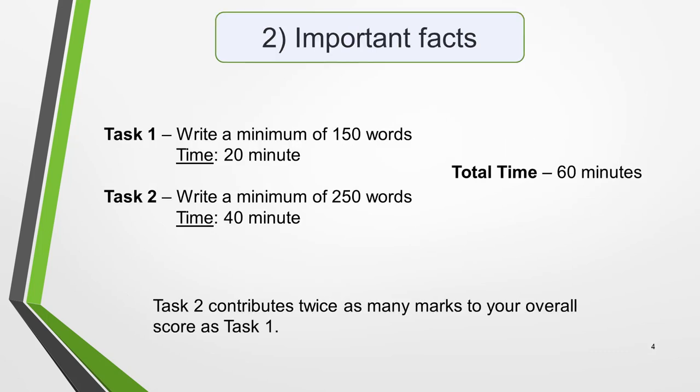Now for some important facts. For Task 1, you should write a minimum of 150 words, and the time allowed is 20 minutes. For Task 2, you should write a minimum of 250 words and the time allowed is 40 minutes. This gives a total time limit of 60 minutes or 1 hour. It's also important to know that Task 2 contributes twice as many marks to your overall score as Task 1.